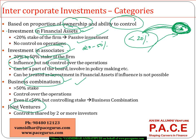When we talk about 20% to 50%, generally we say you can influence the operations of the firm but not control. Influence means you can have some members on the board of the company and get involved in policy making, but you cannot control because you don't have more than 50% of the stake. Someone else holds the 50%-plus stake. Such investments we call investment in associates.